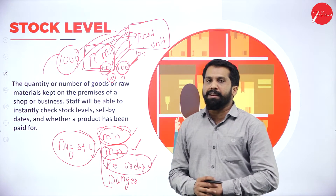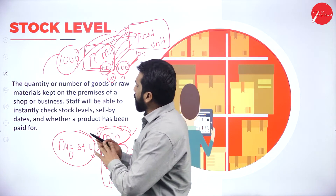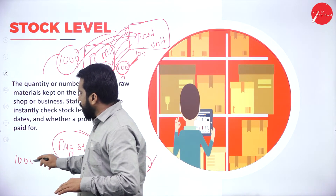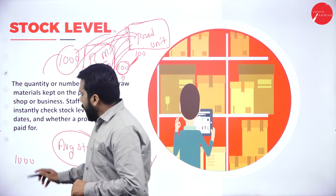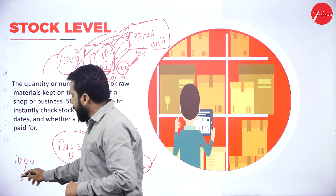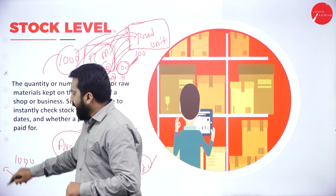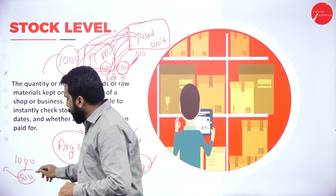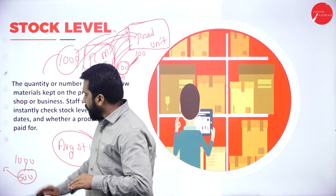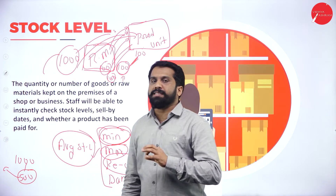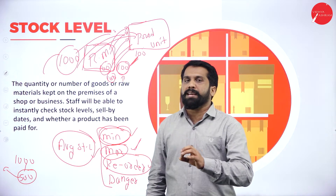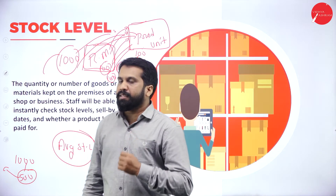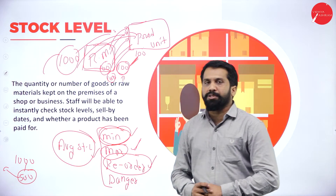Reorder stock level means they have a fixed standard. They have 1000 units of raw material in the godown, and when it reaches 500, it acts as an alarm — they call and order the balance 500. Whenever the 1000 reaches 500, they should reorder for the rest. This is called reorder stock level.